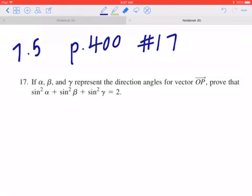Hi everyone, let's take a look at number 17 on page 400. If alpha, beta, and gamma represent the direction angles for the vector OP, prove that sine squared alpha plus sine squared beta plus sine squared gamma equals 2.